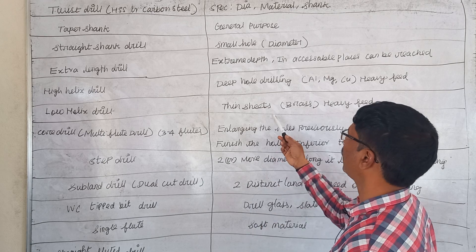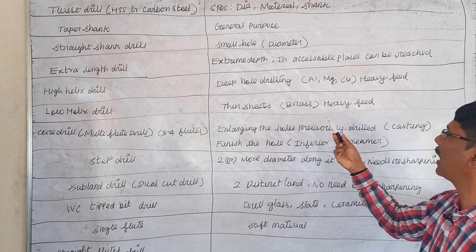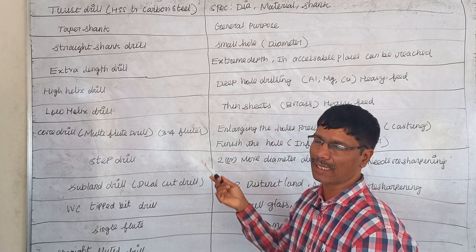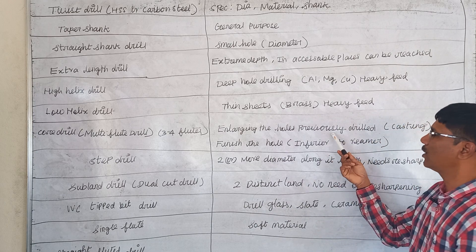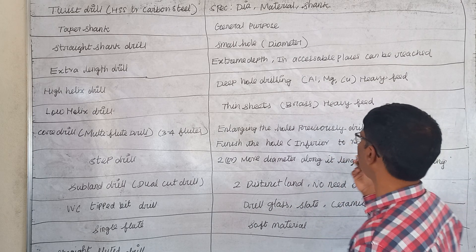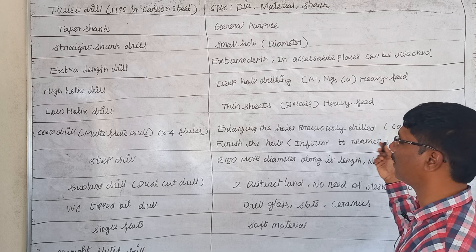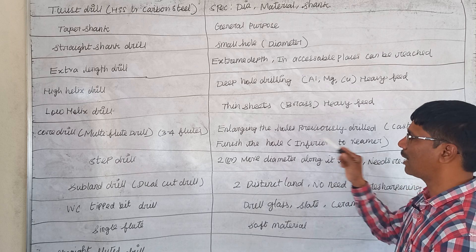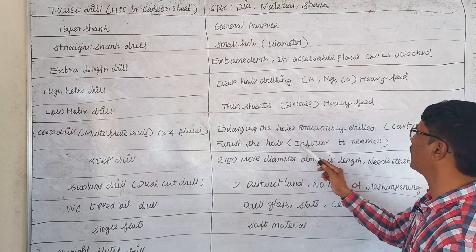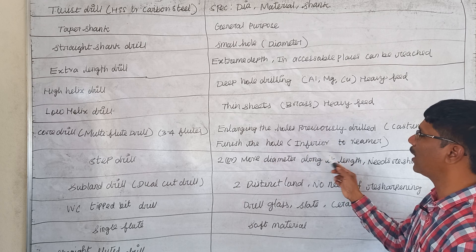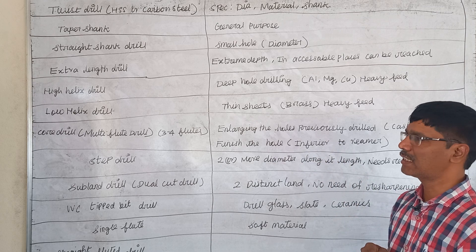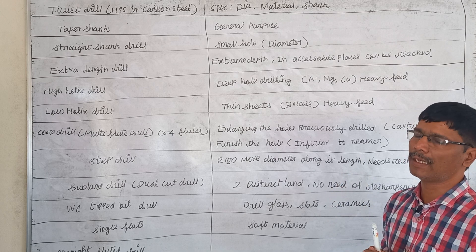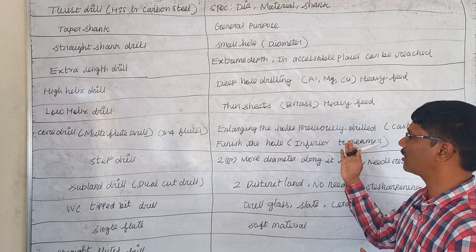The Low LX drill can be used for thin sheet brass, and high feed can be applied. A core drill is also called a multi-flute drill because it consists of 3 to 4 flutes. It is used for enlarging previously drilled holes or holes produced by casting. It can also be used to finish holes, but quality-wise it is inferior to a reamer.